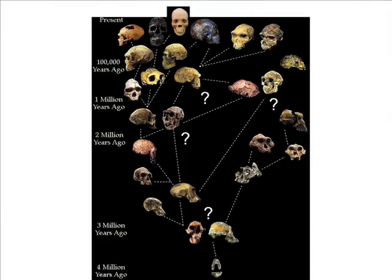Well, it turns out such things have existed in the past — they're just gone now. What is shown here is one interpretation of the hominin fossil record — how the extinct species of the past that may or may not have led to us are related to one another. This is a very contentious field: the field of physical paleoanthropology.